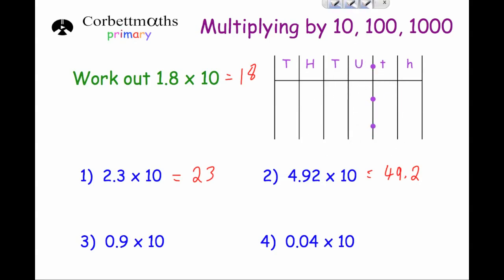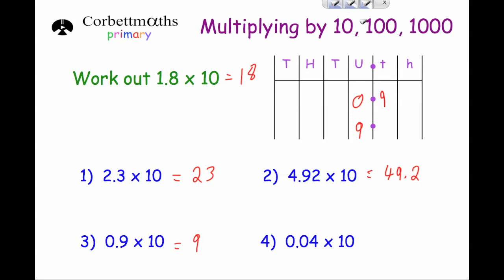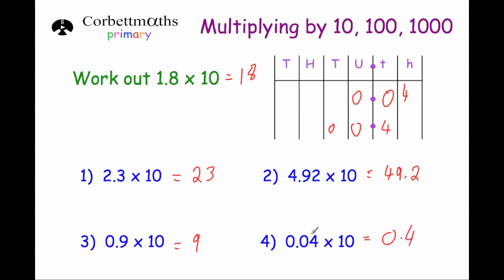Next, multiply 0.9 by 10. The 9 in the tenths column moves across to become units, so 0.9 multiplied by 10 gives 9. And if we multiply 0.04 by 10, each digit moves one column to the left. The 4 moves from the hundredths column into the tenths column, so the answer is 0.4. That makes sense — if we had four hundredths and multiplied by 10, we get four tenths.